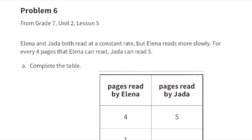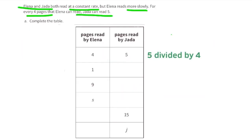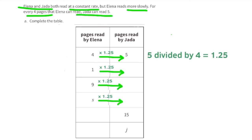Problem number six, from seventh grade Unit 2, Lesson 5: Elena and Jada both read at a constant rate, but Elena reads more slowly. For every 4 pages Elena reads, Jada can read 5. Part A: complete the table. Jada reads 1.25 pages for every 1 page Elena reads. We can multiply Elena's pages by 1.25 to find Jada's, or divide Jada's by 1.25 to find Elena's.